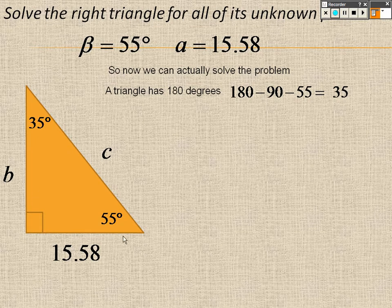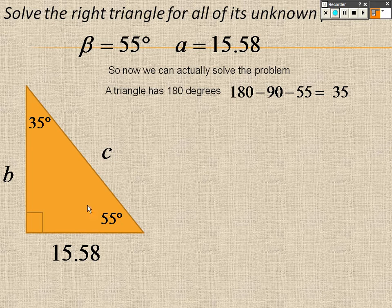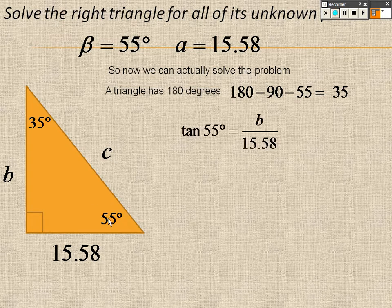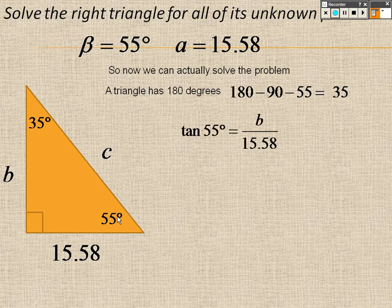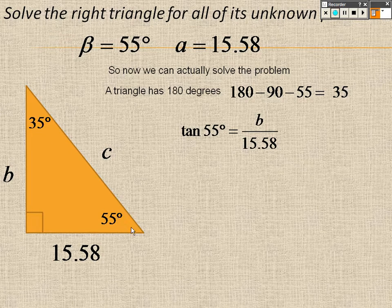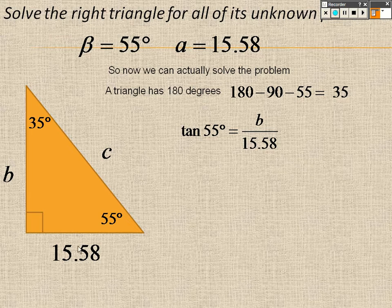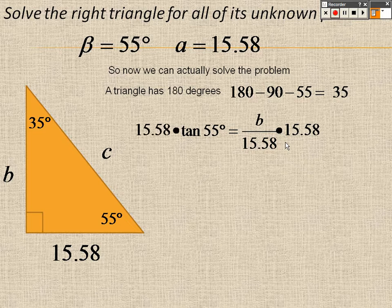Once again, because I know all of these, now I can use SOHCAHTOA, and I'm just going to look at 55 again. I'm going to do tangent, and the reason why I'm going to do tangent is because tangent is opposite over adjacent. It's b over 15.58, so multiply by 15.58 on both sides, and I get roughly 22.25.